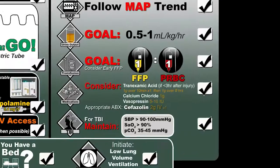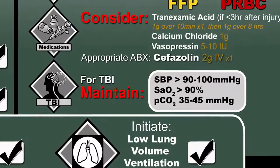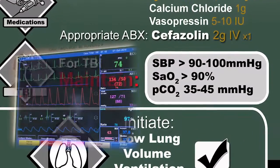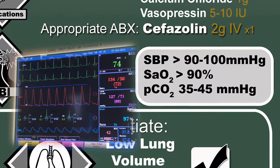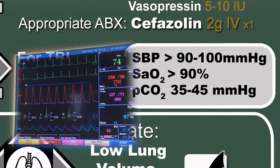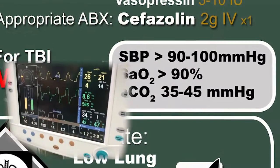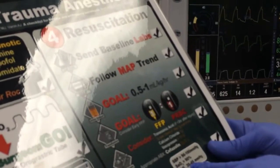In case of traumatic brain injury, the goals are to maintain systolic blood pressure greater than 90 to 100 mmHg, oxygen saturation greater than 90 percent, and a PCO2 between 35 to 45 mmHg.